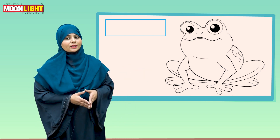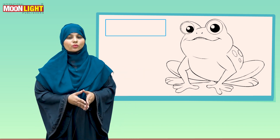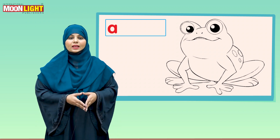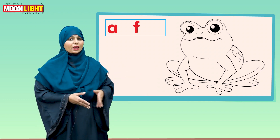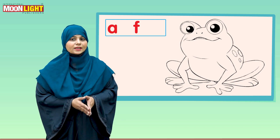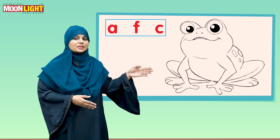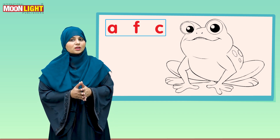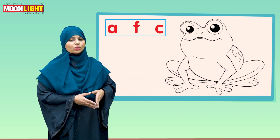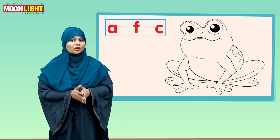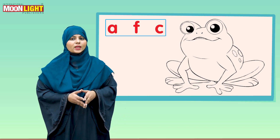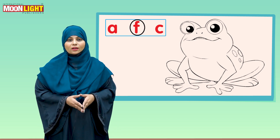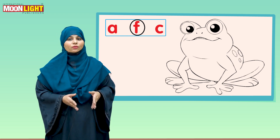There is another picture — it's a horse. There are three letters below this picture. The first one is I, the second one is H, and the third one is D. Now focus on the initial sound: horse — H. Yes, that's correct! Now encircle letter H, because H says 'h' and H is for horse.